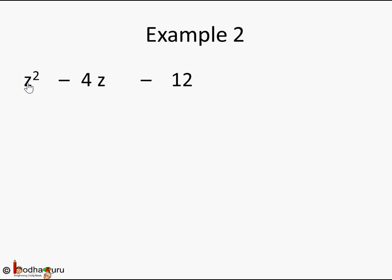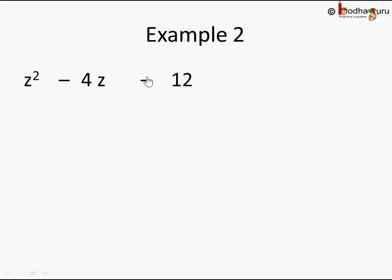Let's take another example: z² minus 4z minus 12. Because there is a minus sign, identity 2 or 3 could be used, but to use identity 2 or 3 we need to have a perfect square. This is not a perfect square — 4 is a perfect square but not z². If it were 4z², we might use identity 3, but z² alone is not a perfect square, and 12 is also not a perfect square. So can we use identity 4?